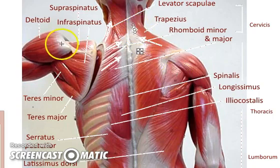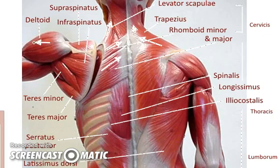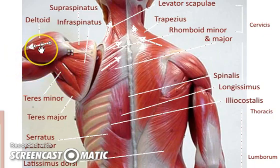Deltoid, out here, has a different action. Instead of adducting, it's going to abduct, because that muscle is going to shorten and bring the arms away from the body — abduction.